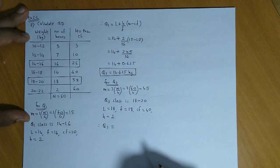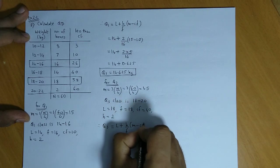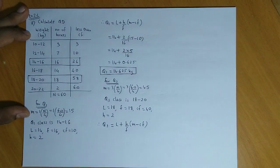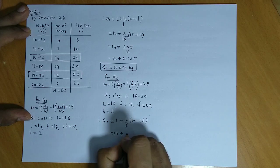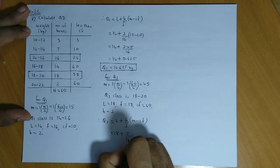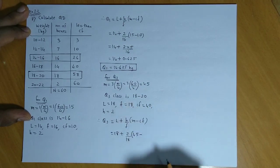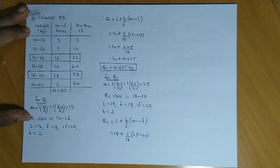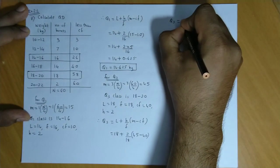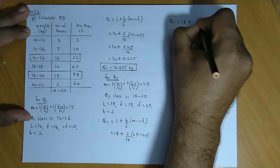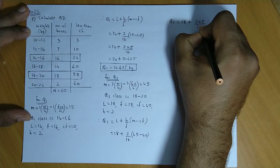We calculate Q3 as L plus H upon F into M minus CF. L value is 18, height is 2, frequency is 18, M is 45, and CF is 40. So Q3 equals 18 plus 2 times the difference, which is again 5, divided by 18.